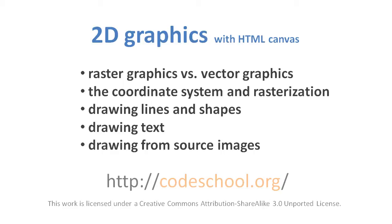From there we'll discuss the relationship between the coordinate system of the canvas and the actual pixels of the canvas. Then we can go over the basic methods for drawing lines, shapes, text, and also rendering source images onto the canvas — that is, taking some image file and having it render as a rectangular area within the canvas.